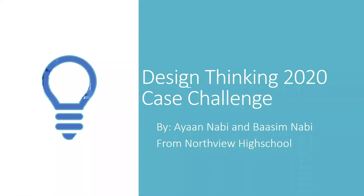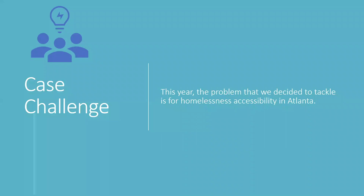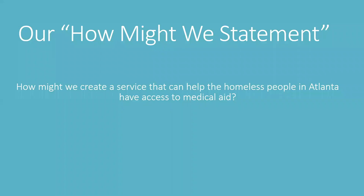Design Thinking 2020 Case Challenge by Ayaan and Basim Nabi from Northview High School. This year the problem that we decided to tackle is homelessness accessibility in Atlanta. Our How Might We statement: How might we create a service that can help the homeless people in Atlanta have access to medical aid?